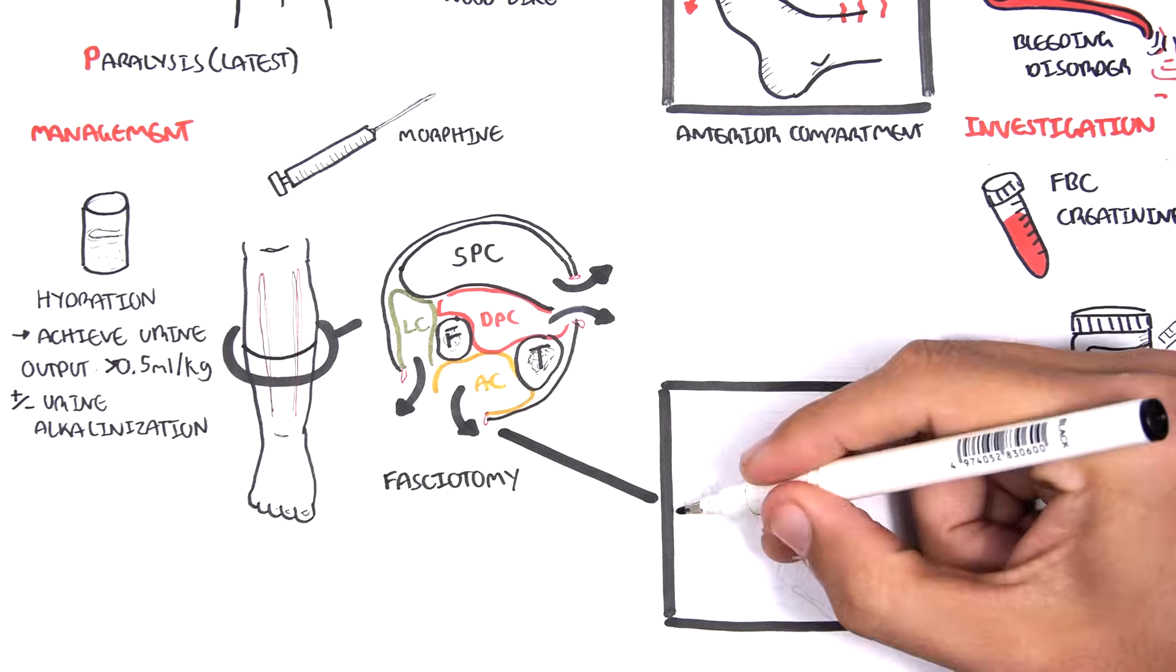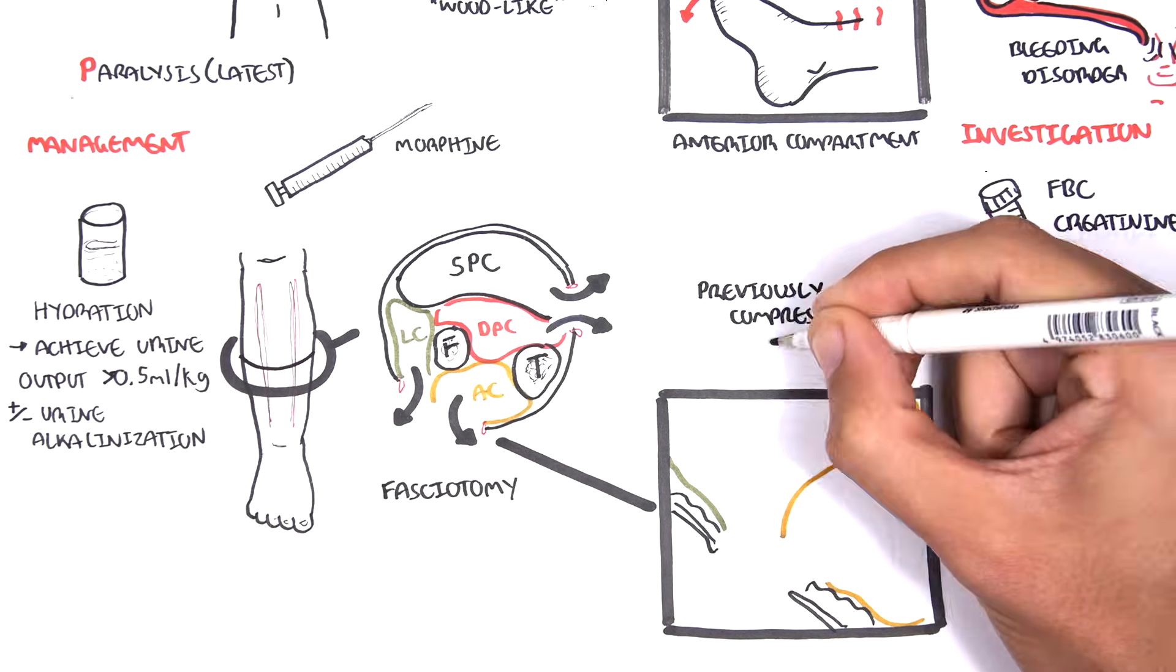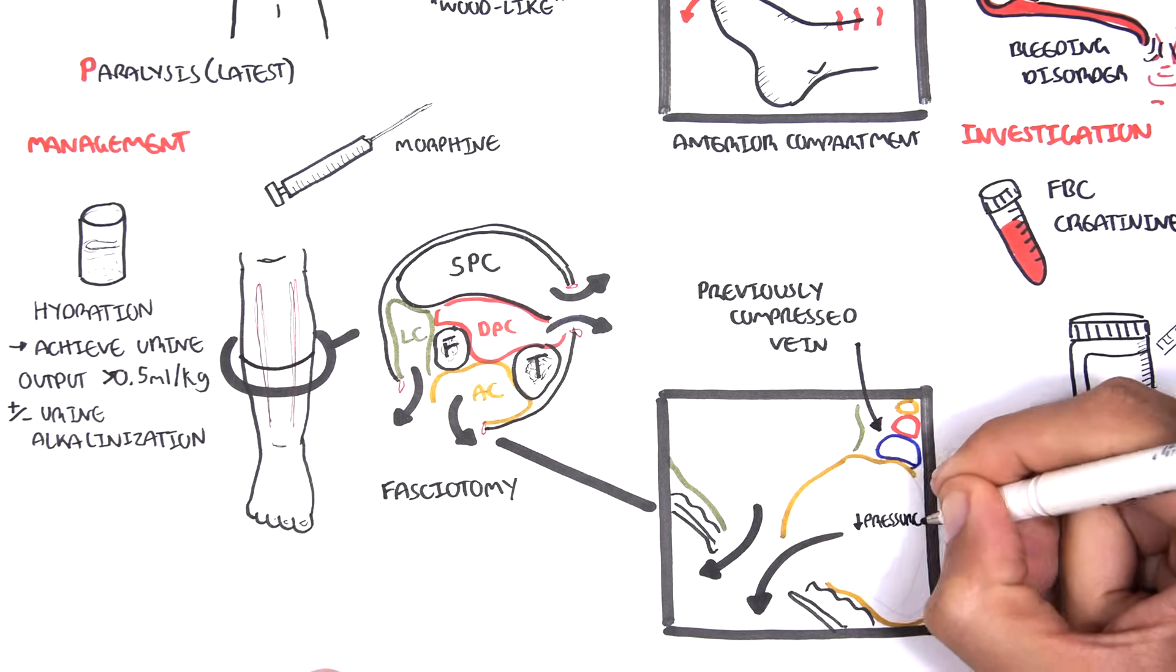Zooming in, by performing a fasciotomy, pressure is decreased in the compartment, which will allow proper flow of arteries and veins and nerves that were previously compressed.